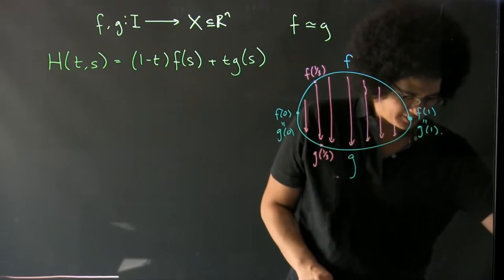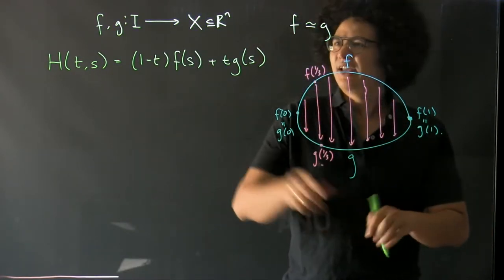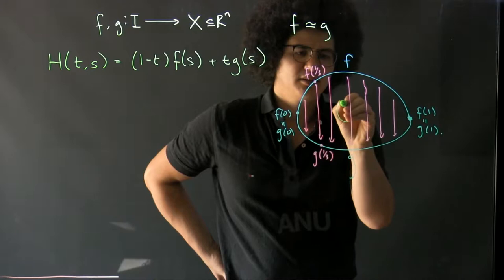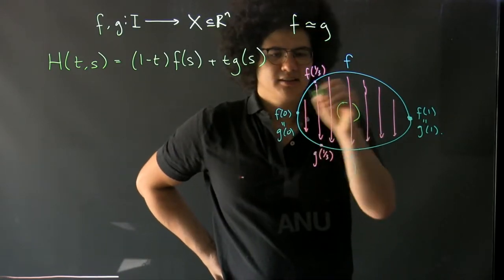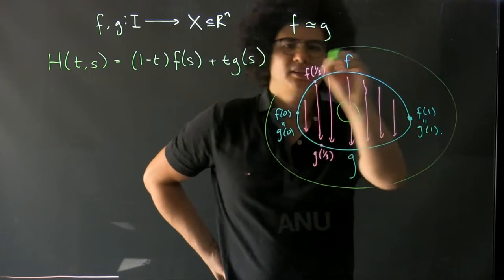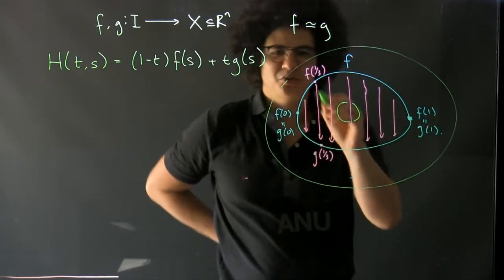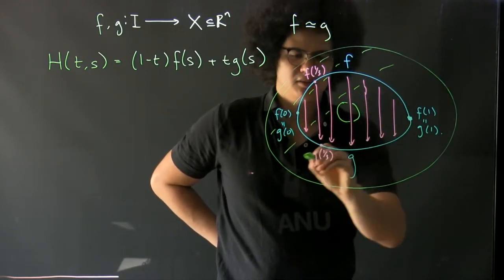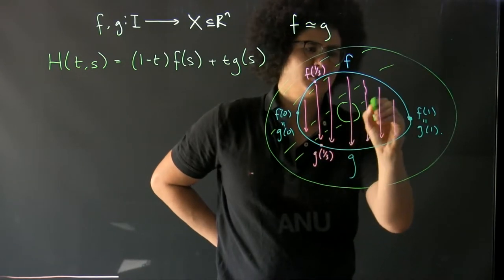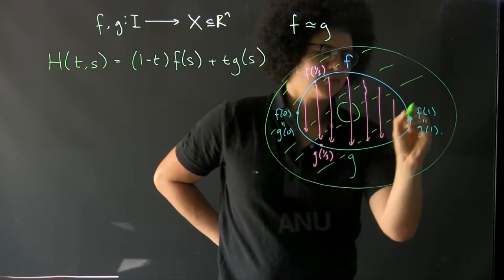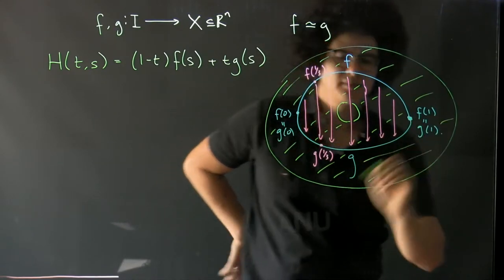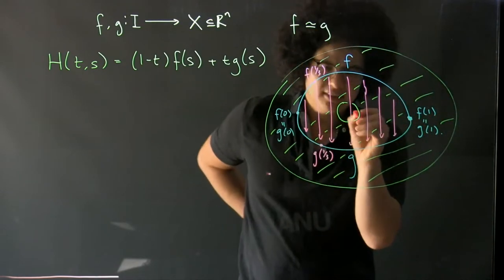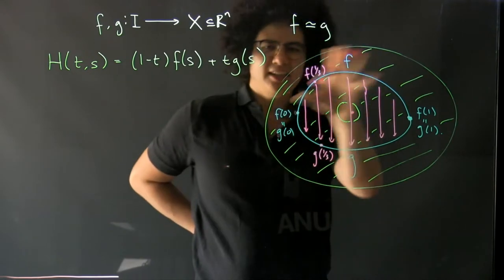However, if our X is say an annulus, so say this is that and around here, and our space is everything between these two green circles. Now the problem here is that this point is not in our X.